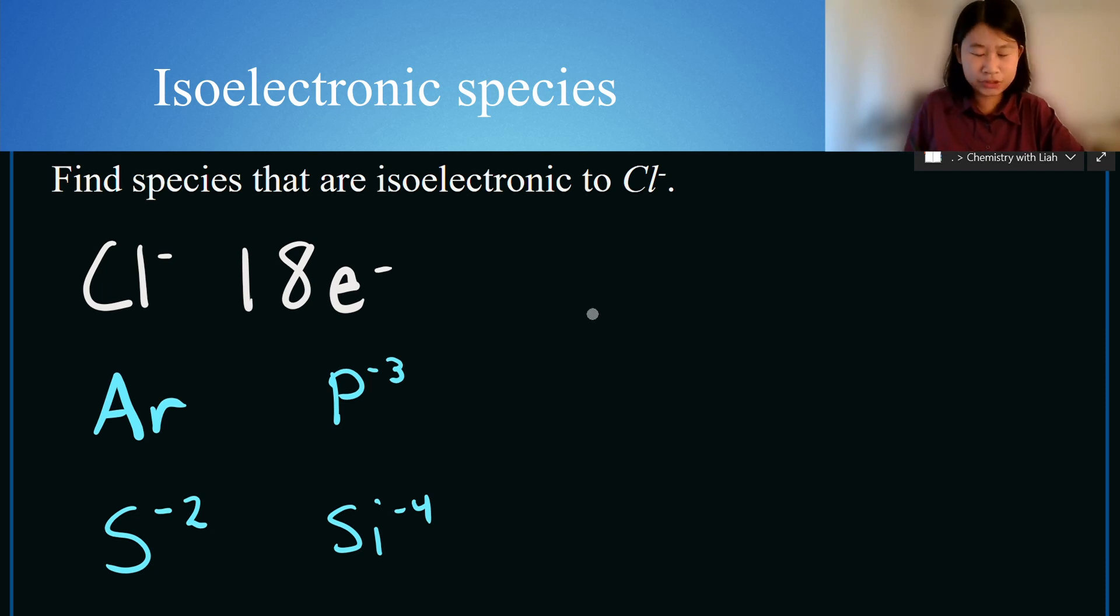Now let's look for some cations, things with positive charges. If we take a look at potassium, this has 19 electrons. So we would have to take one electron away to make it 18 electrons, and if we take away one negative charge, we get potassium plus one.